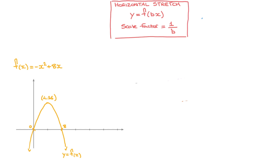Now let's see how this actually works with an example. Here we have our function f of x, which equals to negative x squared plus 8x, and its graph is shown underneath. Notice that this curve crosses the x-axis at the origin — coordinates 0, 0 — as well as at 8, coordinates 8, 0. And this curve has a vertex, a maximum point, with coordinates 4, 16. As a first example, let's consider y equals to f of 2x.